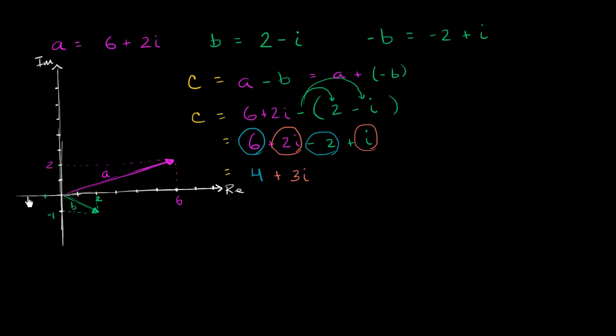Let's see, negative two plus i gets us right over there. And we see we've essentially just flipped this vector over the origin. So this right over here is negative B.